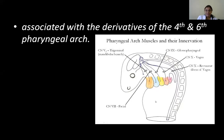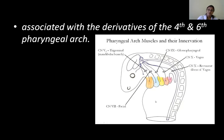The vagus innervates the entire alimentary tract from the pharynx down to the two-thirds and one-third junction of the transverse colon, which marks the end of the midgut and beginning of the hindgut. Beyond that, it is the pelvic splanchnic nerves from S2, S3, and S4. In the GI tract, the vagus increases secretions and is required for gastric and intestinal motility.